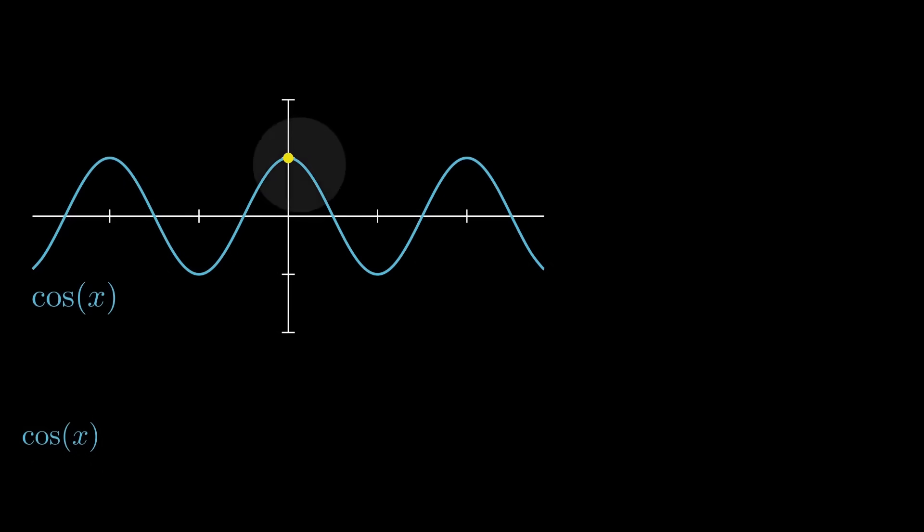Same thing, we're going to find the Maclaurin polynomial for cosine x as our next step in showcasing Euler's identity, derived through Taylor's expansion, of course. So we start at f of zero again, but this time it's the cosine of zero, so it starts at one.